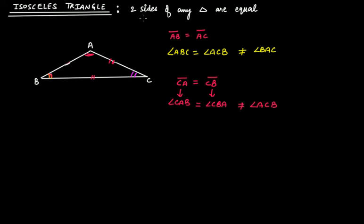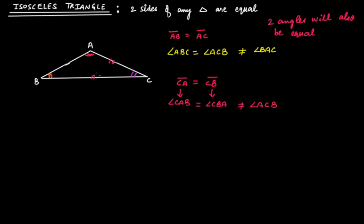So, two sides equal means that triangle is isosceles, and the angles formed by those two equal sides on the opposite side — where they intersect — will also be equal. Two sides equal means two angles will also be equal. Those two equal angles are the angles formed by those two equal sides only, not by the third side that is not equal. The angle formed by that unequal side will not be equal to the other two.